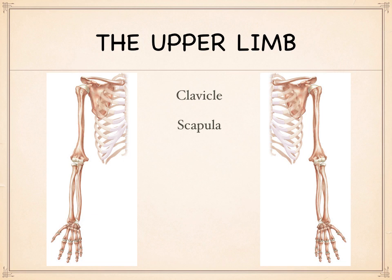The scapula forms the socket for the upper limb bone known as the humerus. This comes into play when people hit their elbow in just the right way, engage a nerve, and get a little electric jolt — they often say they hit their funny bone. Of course, it's got to be due to the fact that this bone is called the humerus. The humerus is the single upper arm bone and is remarkably like the femur in many respects.